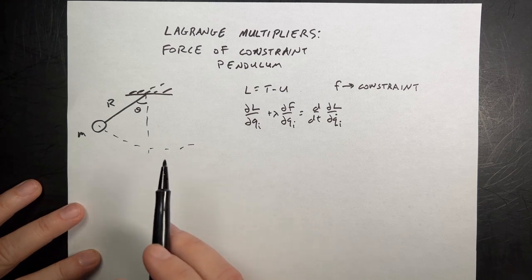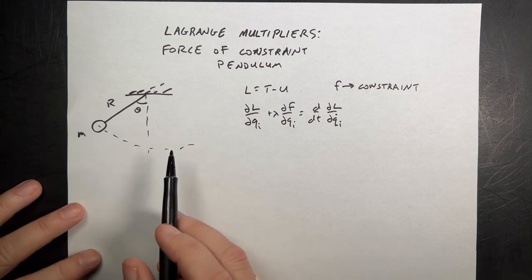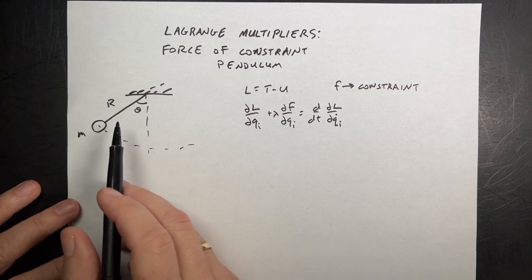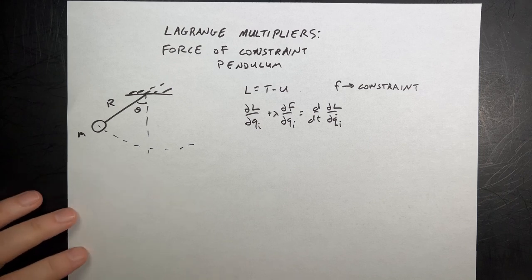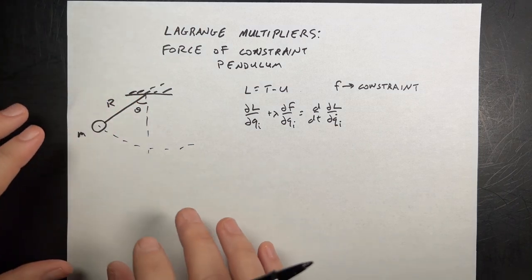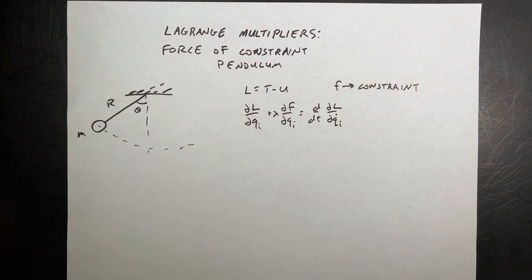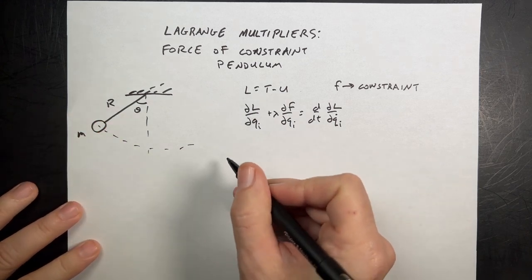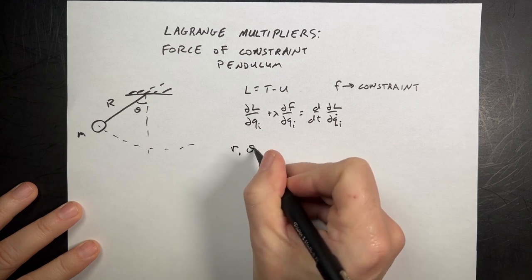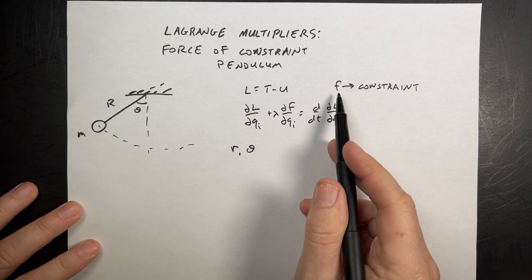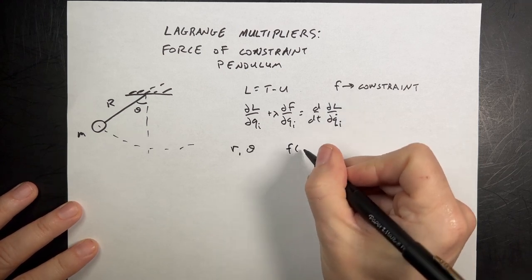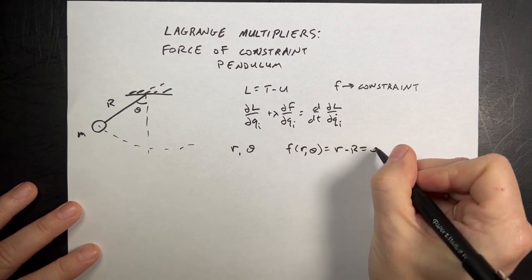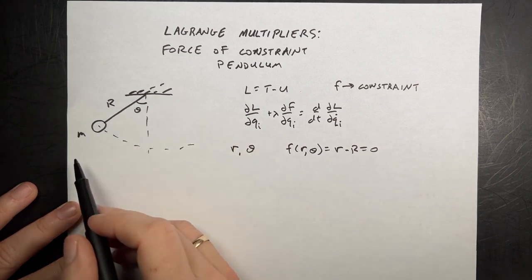The idea is to under-constrain the system. Normally a pendulum has one degree of freedom — you could represent that motion with just one variable, theta. But we want to let there be two variables, r and theta. I want to under-constrain it, then apply a constraint and use that to find the equation of constraint. So I'm going to write the Lagrangian for two degrees of freedom, with degrees of freedom r and theta. Then I'll come up with a constraint equation f. In this case, f(r, theta) = 0, specifically r minus R = 0, where capital R is the length of my string.